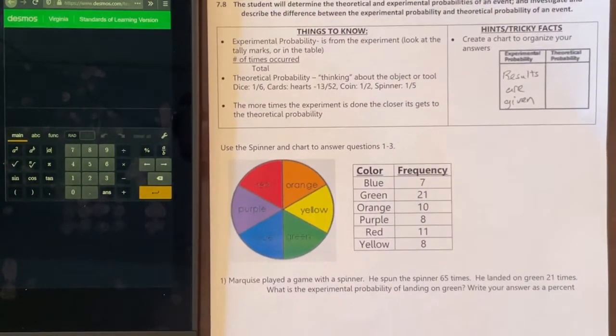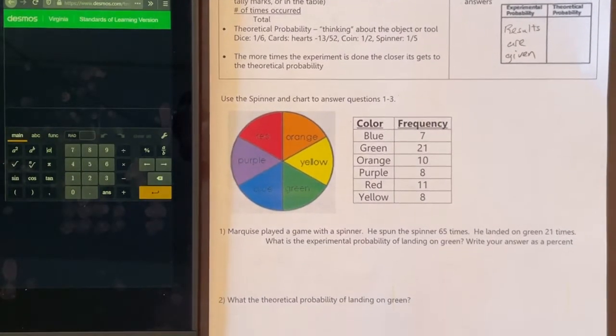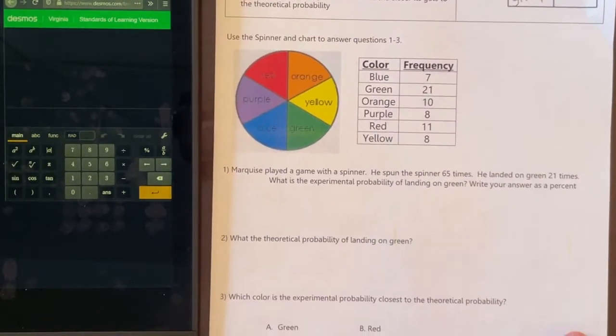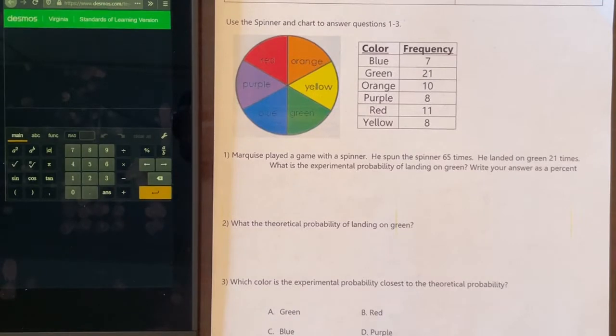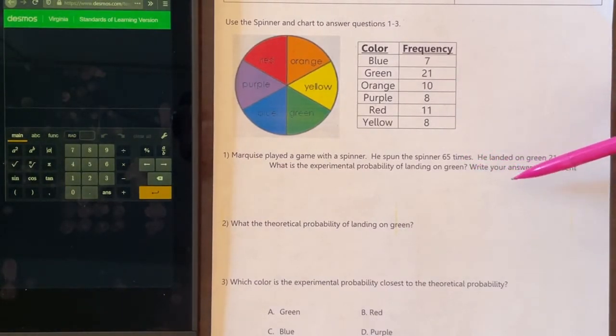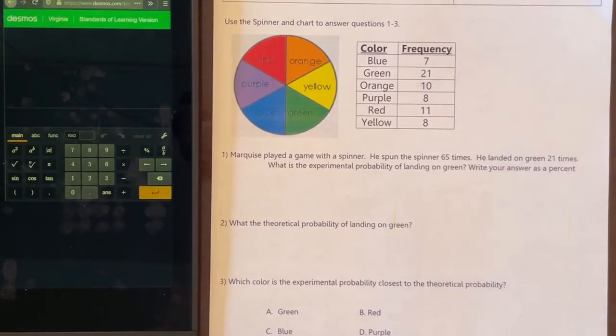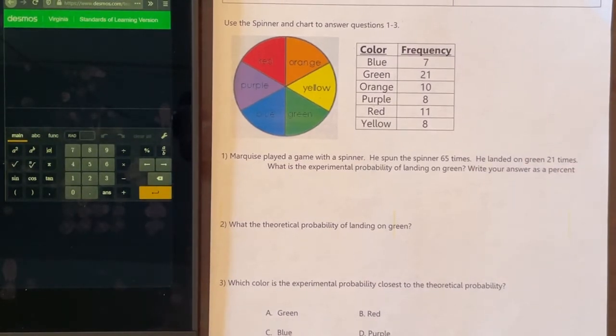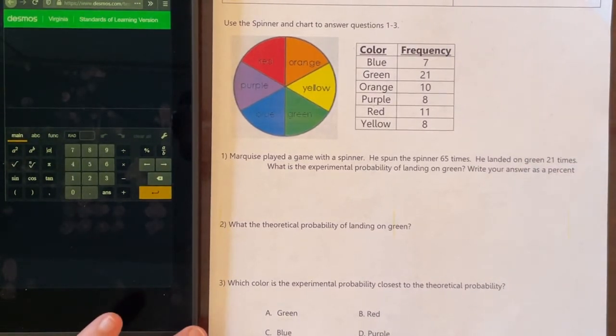So it says for that first one, use the spinner and the chart to answer questions 1 through 3. It says Marquise played a game with a spinner. He spun the spinner 65 times. He landed on green 21 times. What is the experimental probability of landing on green? Write your answer as a percent. So what we will actually do is we will do fraction decimal percent.